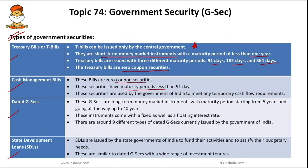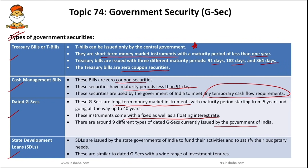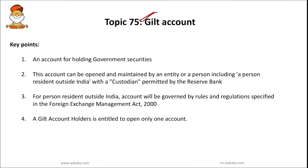Cash management bills have a maturity period of less than 91 days and are issued by the Government of India to meet any temporary cash flow requirements. The next important type of G-sec is dated securities — these are long-term instruments. The major difference between T-bills or cash management bills and dated G-secs is that dated G-secs usually have a maturity period ranging from 5 years to 40 years. These instruments come with a fixed as well as floating interest rate, and there are around 9 different types of dated G-secs currently issued by the Government of India. State development loans are issued by state governments to fund their activities and satisfy their budgetary needs — they are similar to dated G-secs with a wide range of investment tenures.